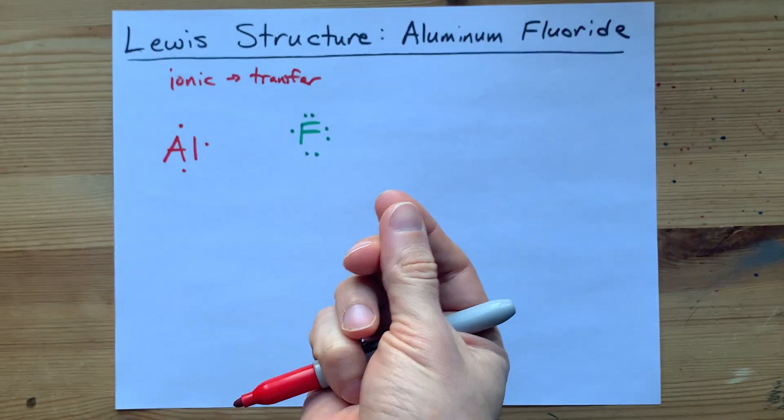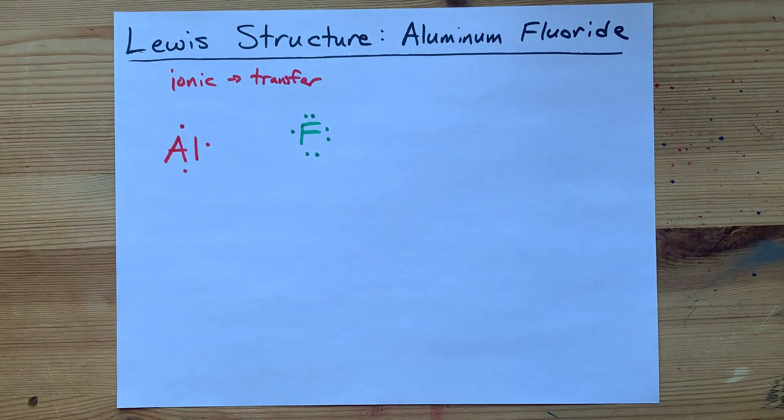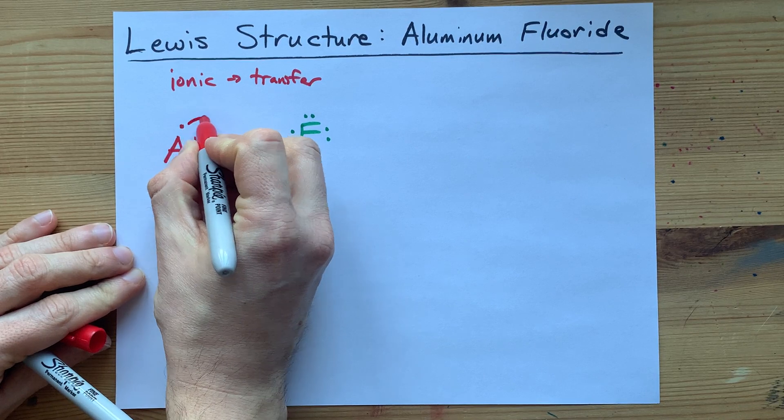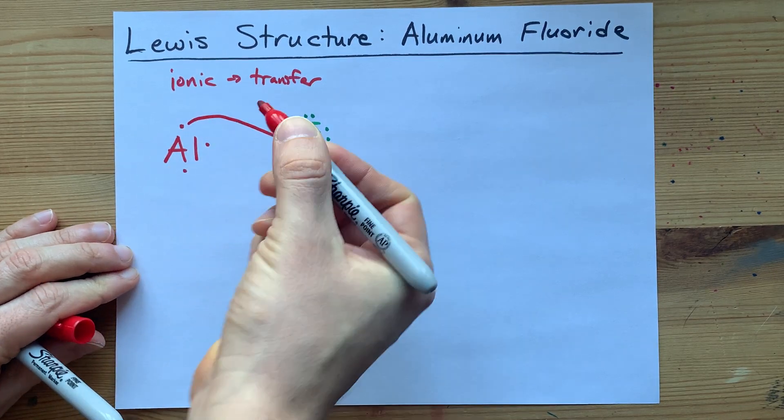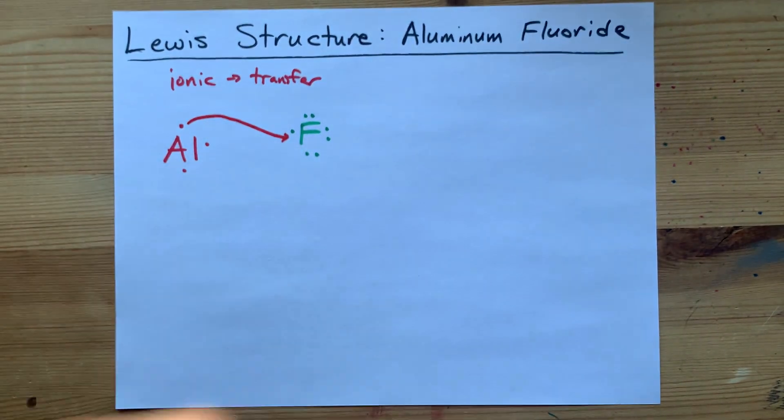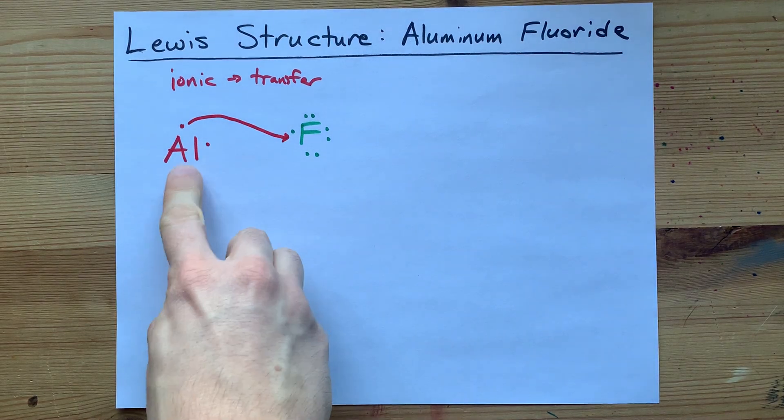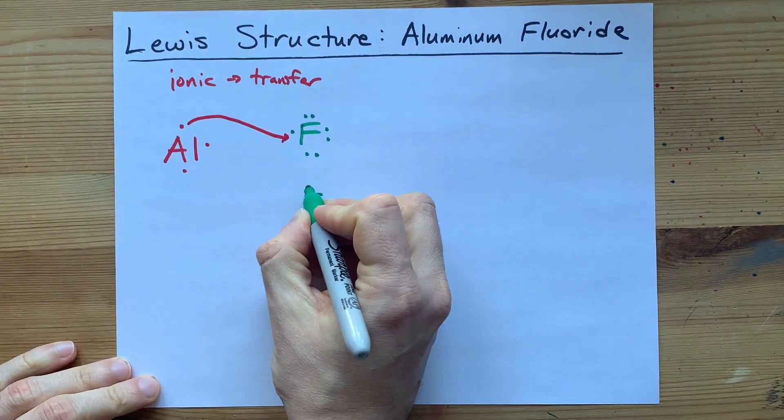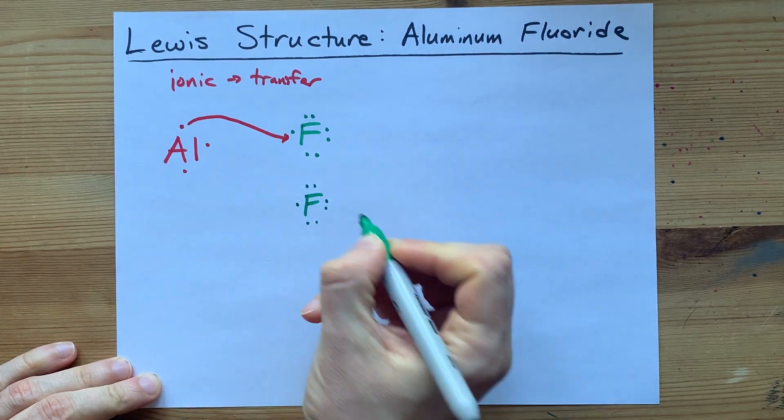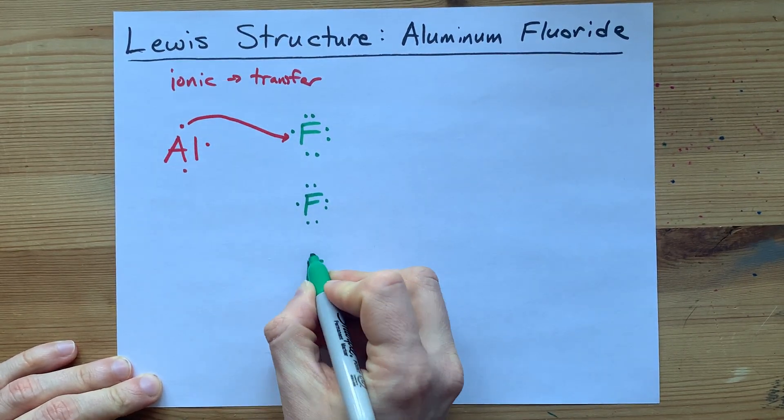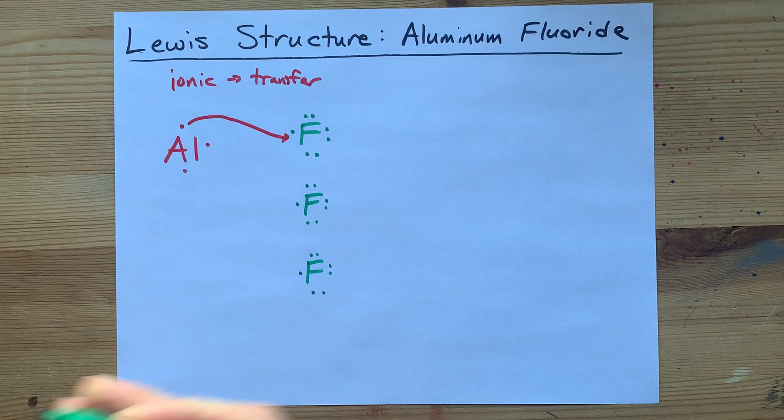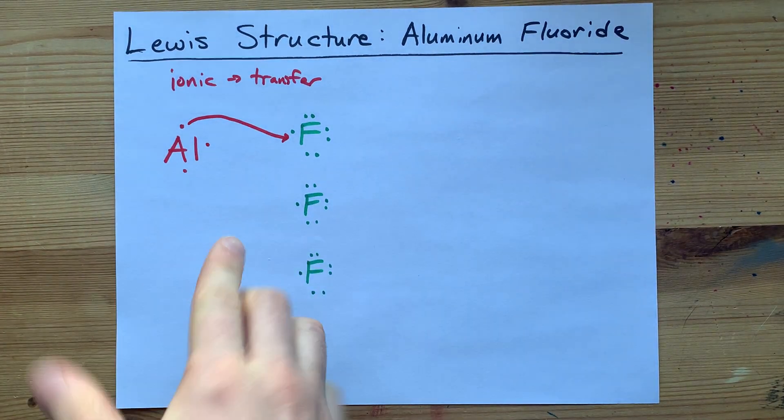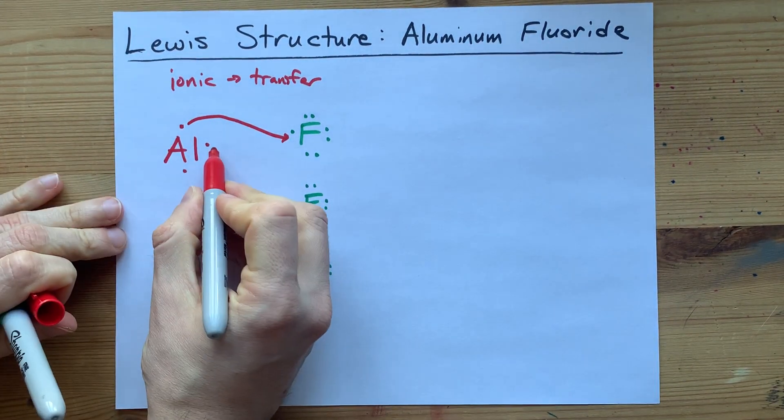Fluorine already has seven, so only needs one more. The aluminum will give one electron to the fluorine, and now the fluorine is happy and stable. But where are these extra electrons from aluminum going to go? What you actually need is more of these fluorines. Here's another one. Here's another one. Now we have homes for all of the electrons that are being given away.